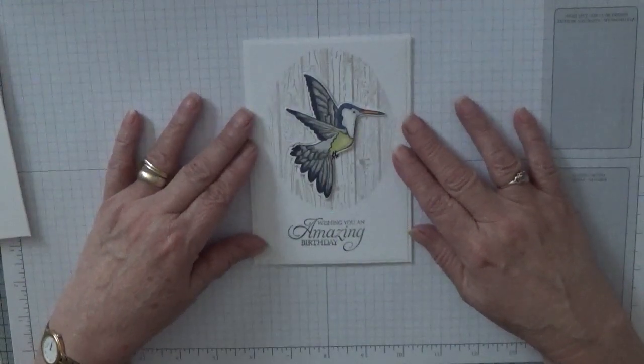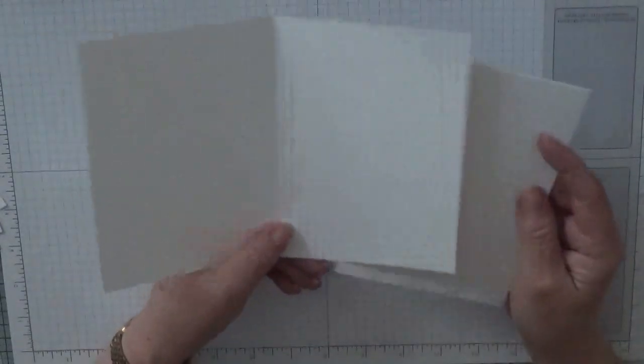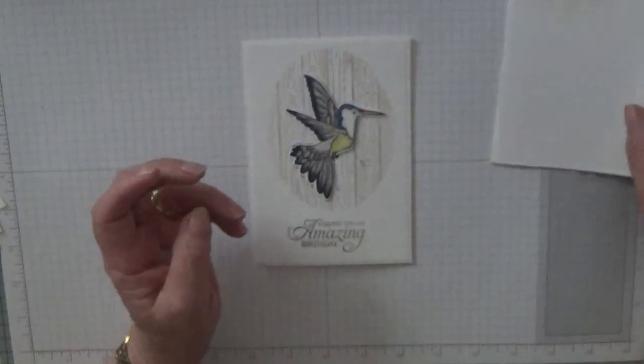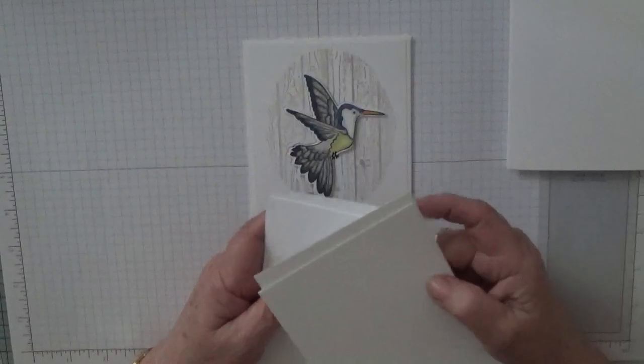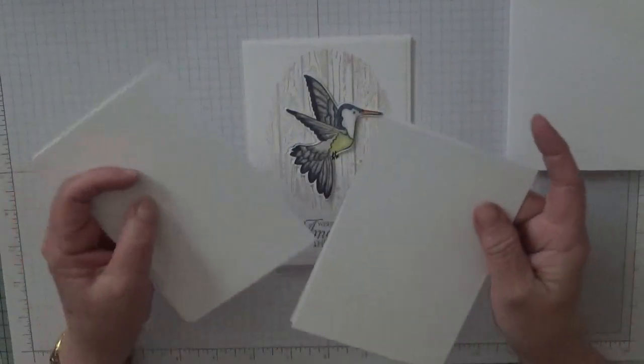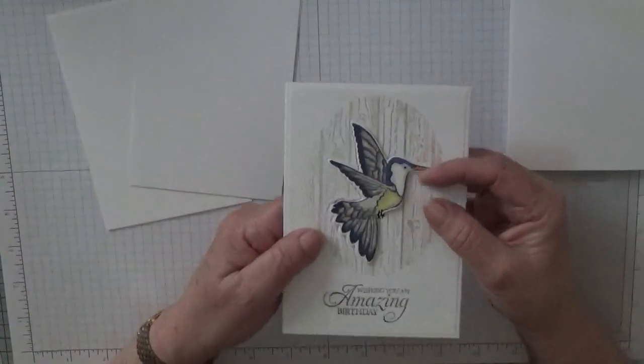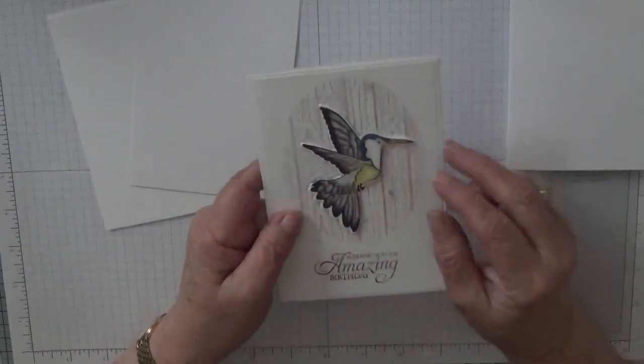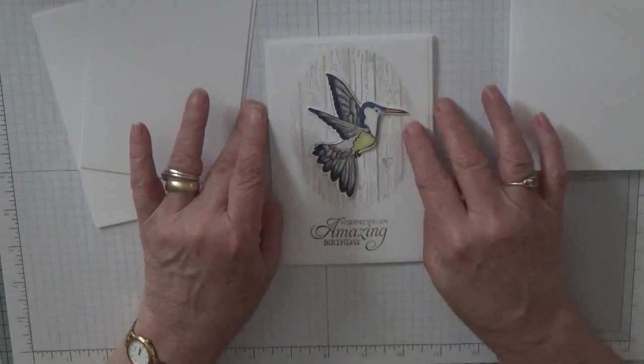So to make this card, I used a card base, a white card base of eight and a quarter and five and seven eighths, scored at four and one eighths and folded in half. And two pieces of white card stock at three and seven eighths by five and five eighths. This card, the bird is raised and I'm going to make one where it's raised like that and then one where the bird is flat. So I'm going to be making two cards today.